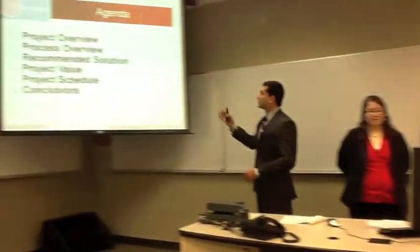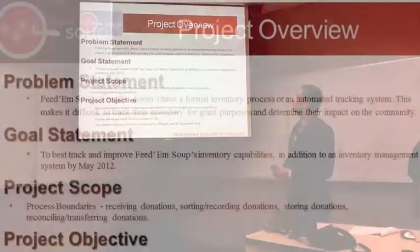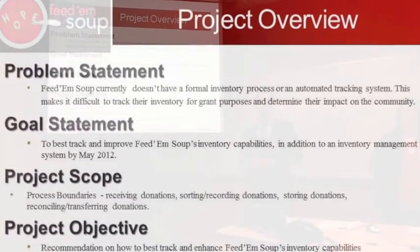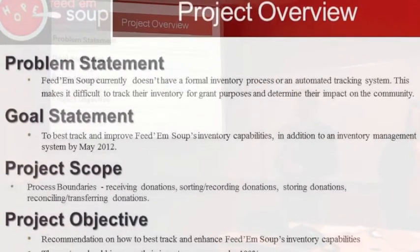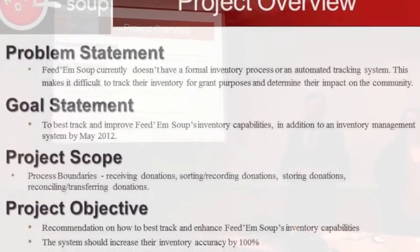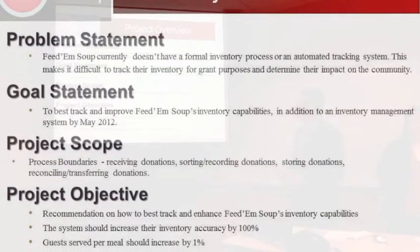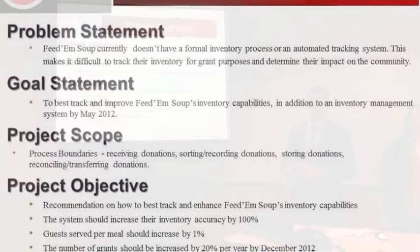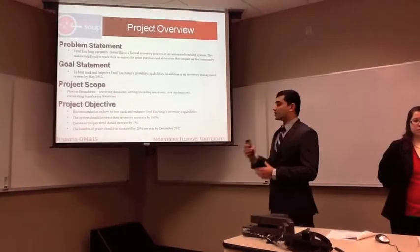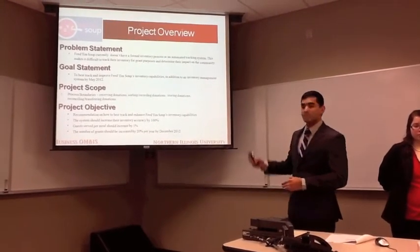These are the few things that we will cover in our presentation. Freedom Soup currently does not have a formal inventory process or inventory tracking system, which made it difficult to track their inventory for grant purposes and also to figure out their impact on the community. Our goal is to best track their inventory, enhance their inventory capabilities, and provide an inventory tracking system by the end of May 2012.